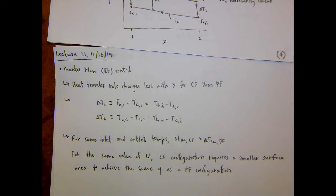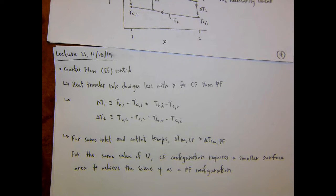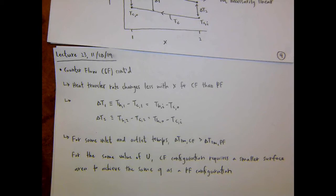Hopefully you'll be able to see this in your lab. A student asks: if counter flow is always better, why would you ever use parallel flow? The only situations I can think of would be geometric constraints, like layout, or if the inlets are in a manufacturing environment and they're really close to each other - it'd be expensive or require a lot of pumping power to take it somewhere else. In your lab you're going to run the heat exchanger in both setups and hopefully see the difference in heat transfer rates.